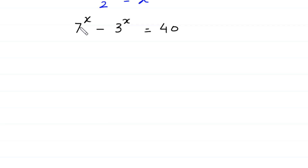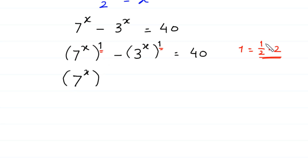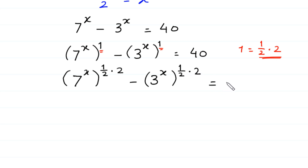Next, 7 to the power x has power 1, and 3 to the power x also has power 1. We note that 1 is equal to 1 over 2 times 2. So we replace this 1 in each term with 1 over 2 times 2, giving 7 to the power x, whole to the power 1 over 2 times 2, minus 3 to the power x, whole to the power 1 over 2 times 2, equals 40.